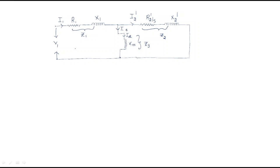First, what is the value of V1 from the circuit? Taking Z1, Z2, and Z3 as Z_equivalent, we can directly write I1 equal to total voltage divided by total impedance — that is, I1 equals V1 by Z_equivalent. To find Z_equivalent, consider points A and B, which have two parallel branches.